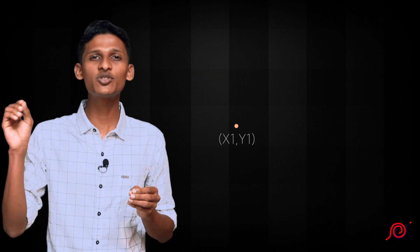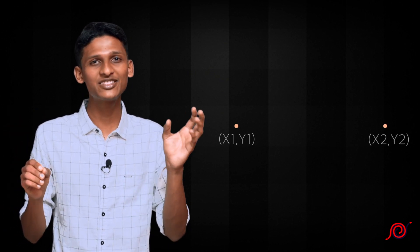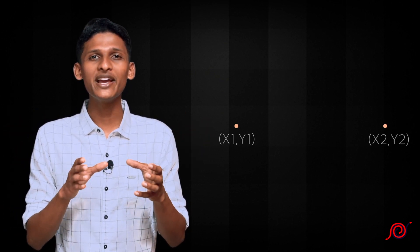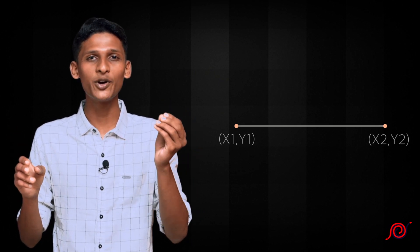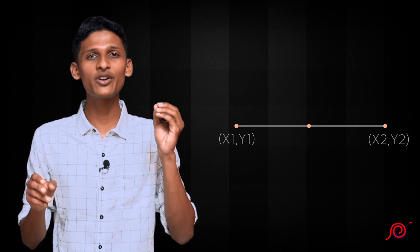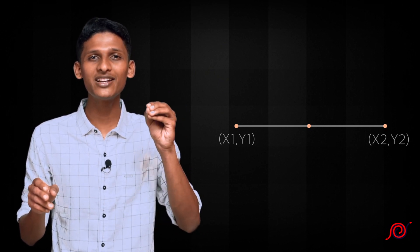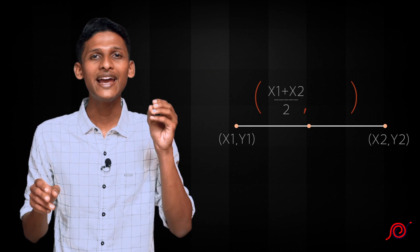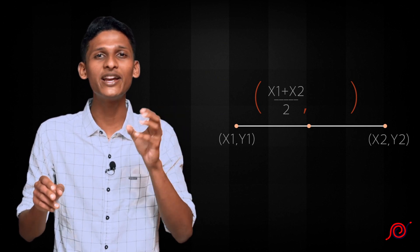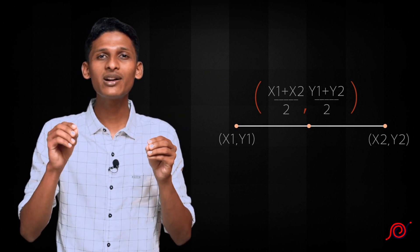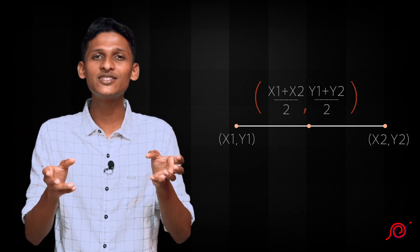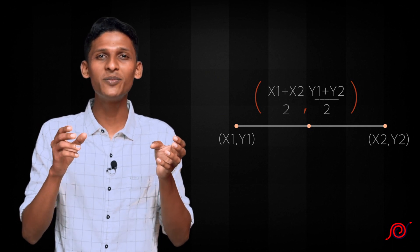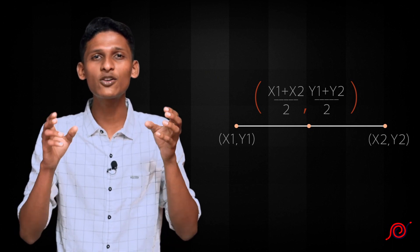We have two points. One point is x1y1 and the other point is x2y2. The line between them has a midpoint. The x-coordinate of the midpoint is x1 plus x2 by 2, and the y-coordinate is y1 plus y2 by 2. Those are the coordinates of the midpoint.